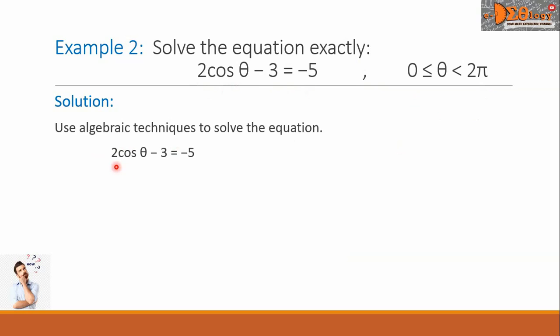Let us isolate this 2cos θ. This -3 we will transpose to the right and combine with the -5, so it becomes -2. So we have now 2cos θ = -2. Let us divide this equation by 2. So the resulting equation now becomes cos θ = -1.